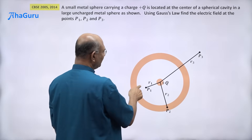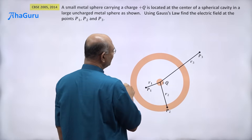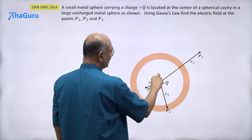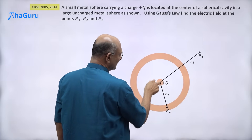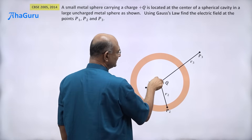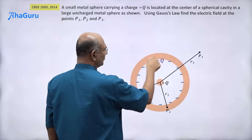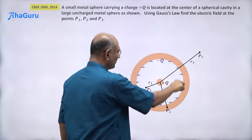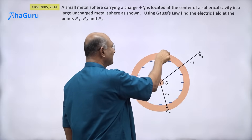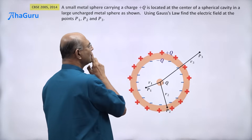We want to find the electric field at P1, P2, and P3. But first we must figure out what will be the charge induced on the inner surface and outer surface of the large metal sphere. This plus q will induce minus q on the inner surface, uniformly distributed because the charge sits at the center. That minus q must have been pulled from the outer surface, so since the sphere was overall uncharged, the outer surface must now have plus q, uniformly distributed.